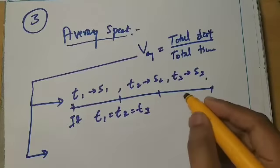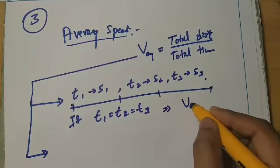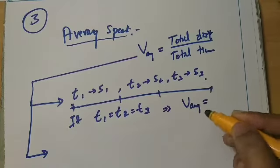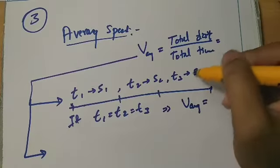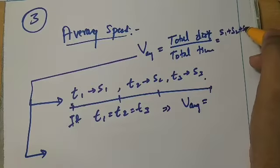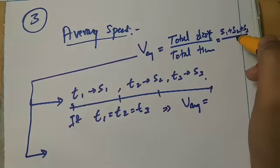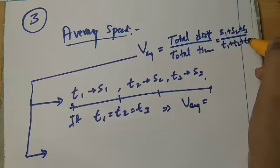In this situation, the average speed formula. What is this formula? This formula is the general expression. Total distance is S1 plus S2 plus S3 divided by total time taken T1 plus T2 plus T3.